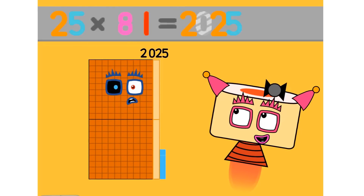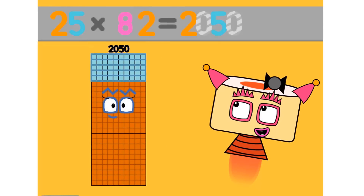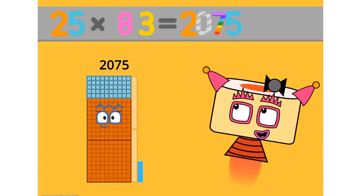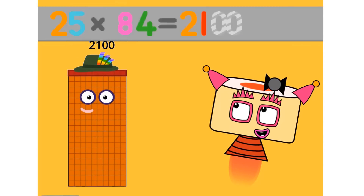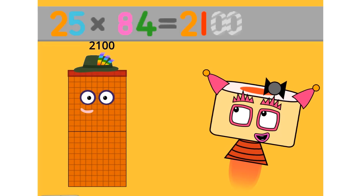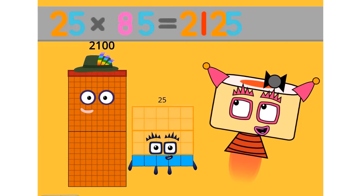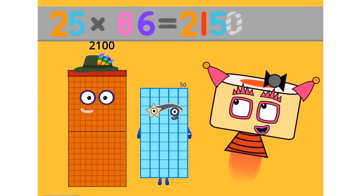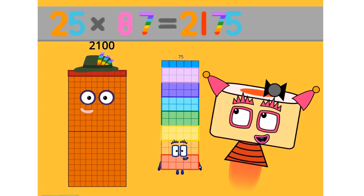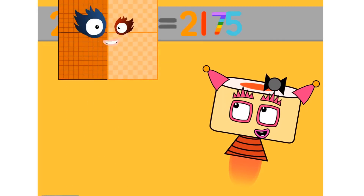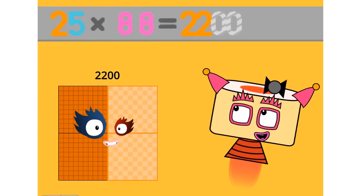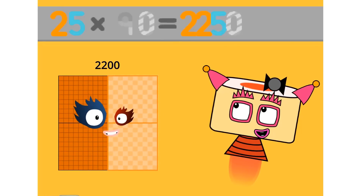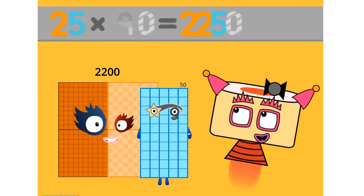25 times 81 equals 2025. 25 times 82 equals 2050. 25 times 83 equals 2075. 25 times 84 equals 2100. 25 times 85 equals 2125. 25 times 86 equals 2150. 25 times 87 equals 2175. 25 times 88 equals 2200. 25 times 89 equals 2225. 25 times 90 equals 2250.